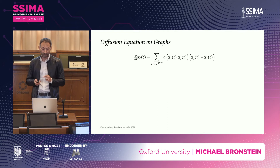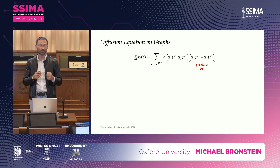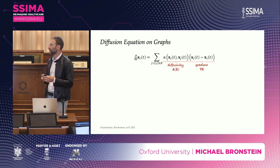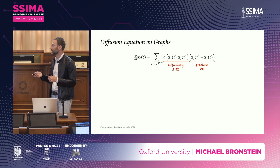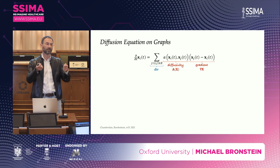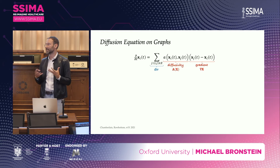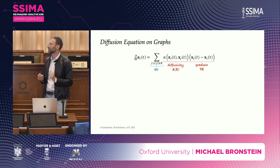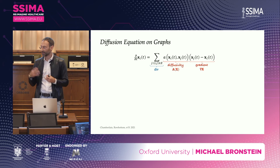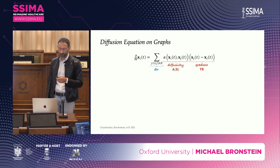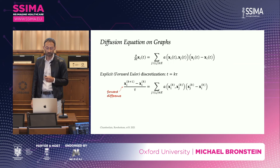It is very easy to write a diffusion equation on the graph, mimicking the continuous case. We have the notion of gradient — just a difference between endpoints of an edge — the notion of diffusivity as a scalar function multiplying this gradient, and the notion of divergence by summing edges that share a vertex. These are dual operators. We can also define the Laplacian on the graph. We get a nonlinear equation — a system of coupled ODEs coupled by the graph structure — and the most straightforward approach is to discretize time with a fixed step size tau using the Euler explicit scheme.